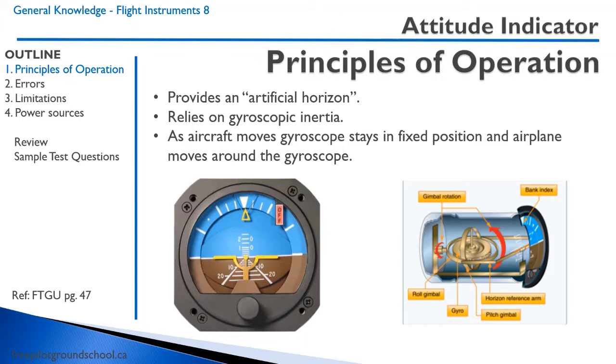The attitude indicator, similar to the heading indicator, relies on the principle of gyroscopic inertia. The aircraft, as the aircraft moves, the gyroscope remains fixed in position relative to actually the universe.